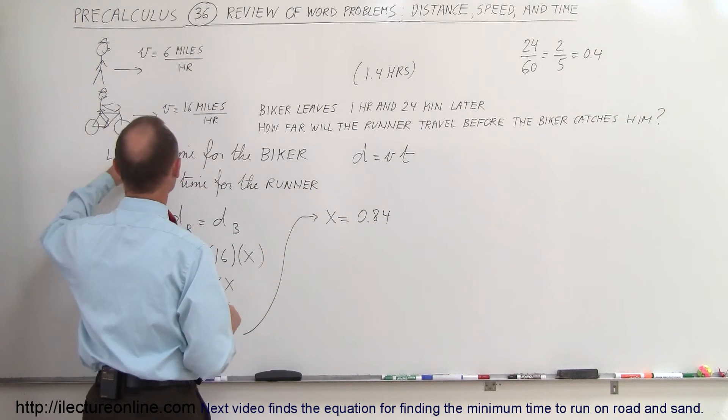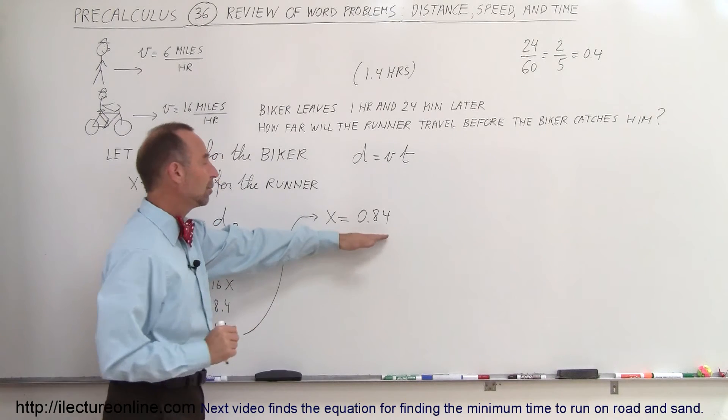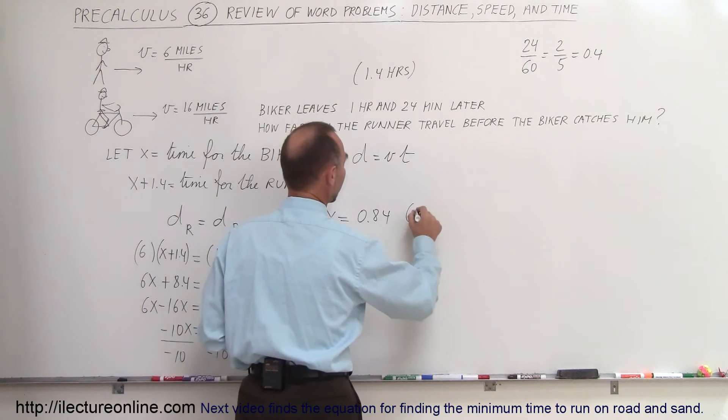Okay, 0.84, x is the time for the biker, so that would be 0.84 hours on the road for the biker.